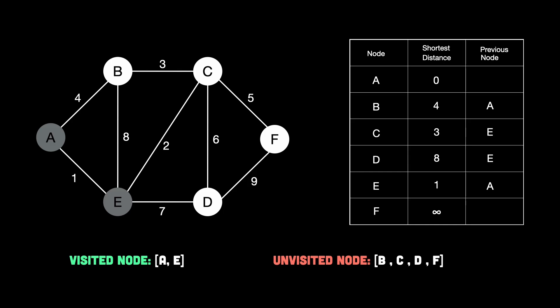Now next up, let's check the smallest unvisited node again. Since A and E are already visited nodes, we can't consider them. The next shortest distance is C with the value of 3. So we visit C. Now we repeat the same process again. We check the neighbors of C, which are B, D, and F.